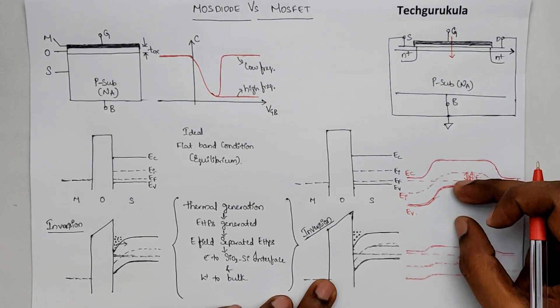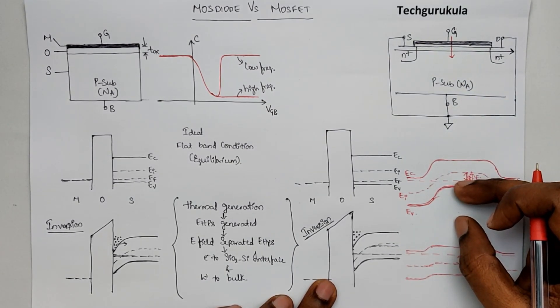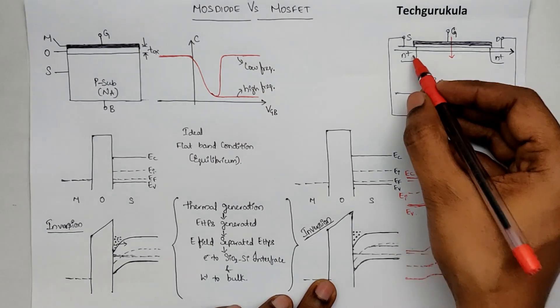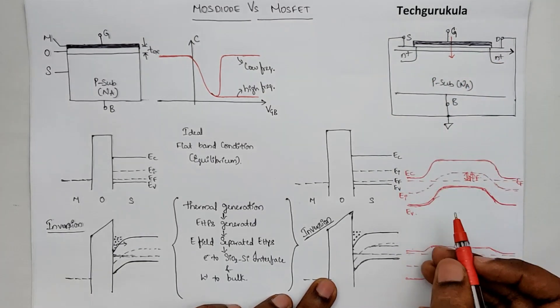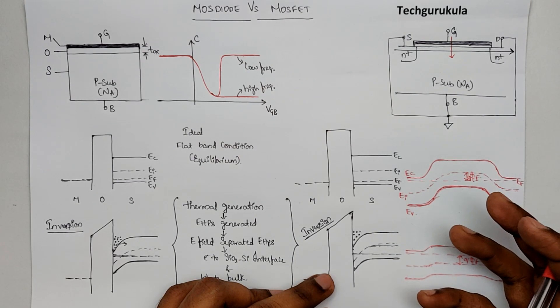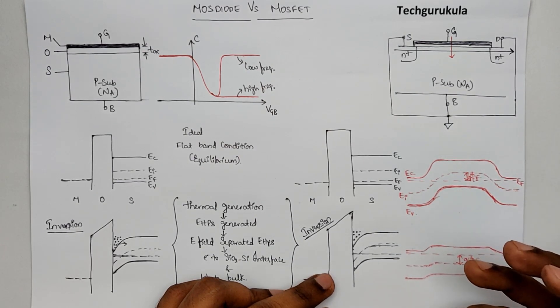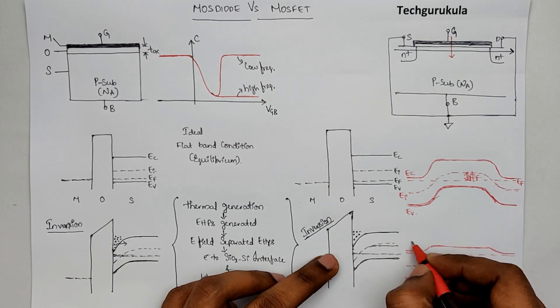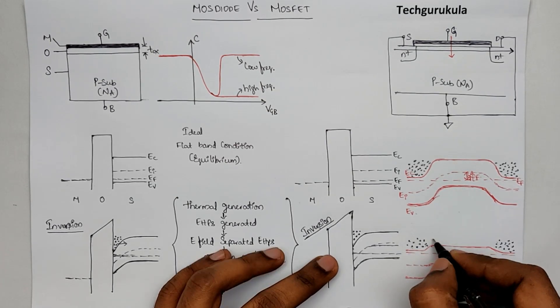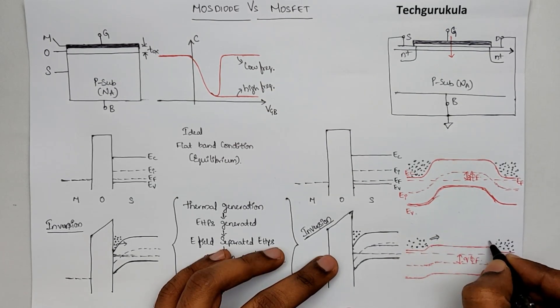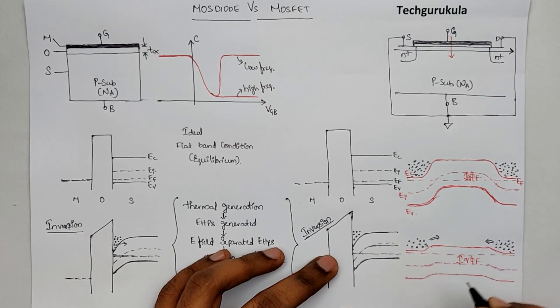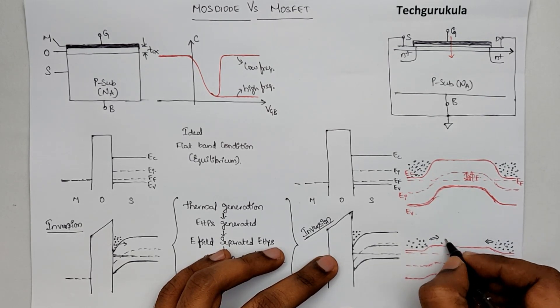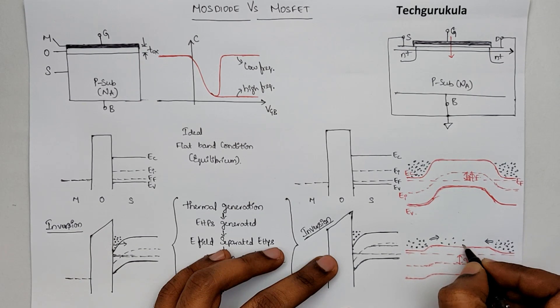When it comes down, this n plus source and drain regions are reservoirs of plenty of electrons, which means when this band comes down, there will be plenty of electrons present here, which would come into this region because the barrier has lowered, which would in turn create the channel.